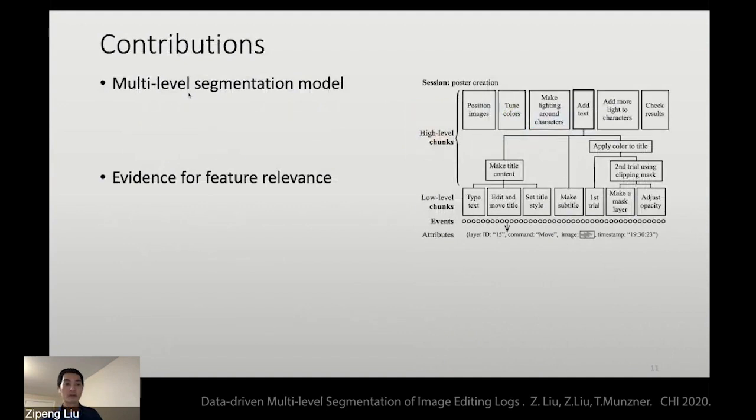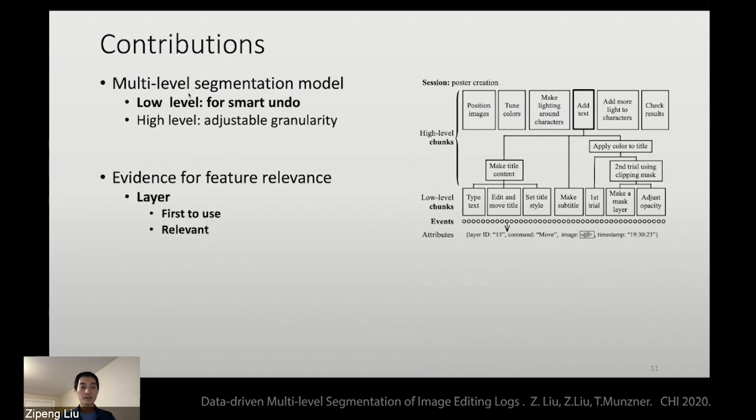So in this paper, we contribute a multi-level segmentation model, where the low-level model is targeting smart undo, and the high level is quite flexible in terms of the granularity. And we also provide some evidence for the relevance of features. So we are the first to use layer for segmentation, and we find that layer is super relevant.